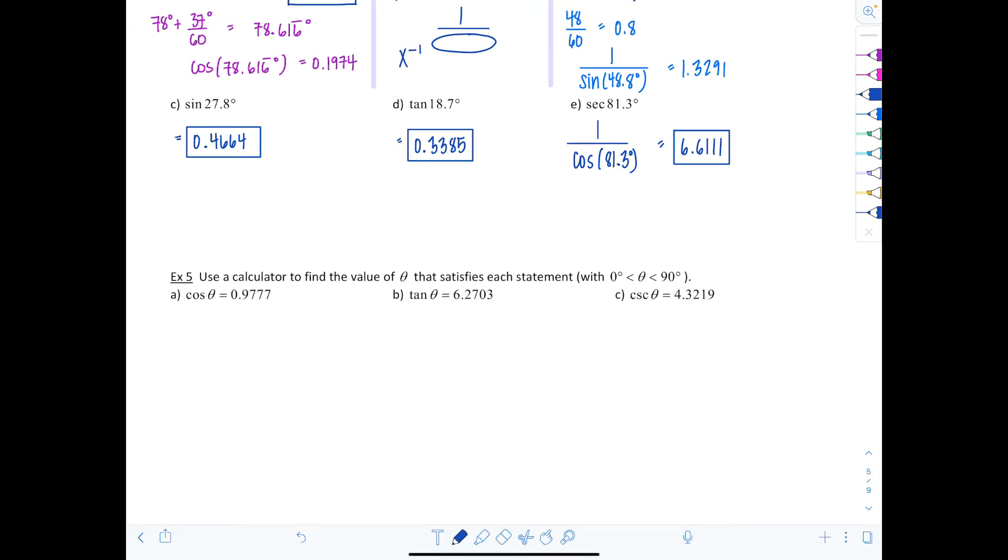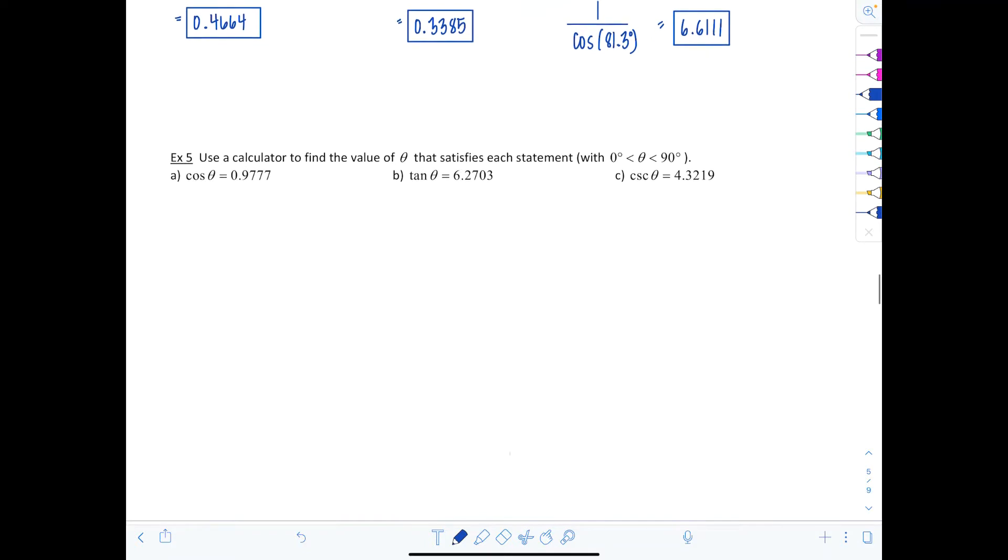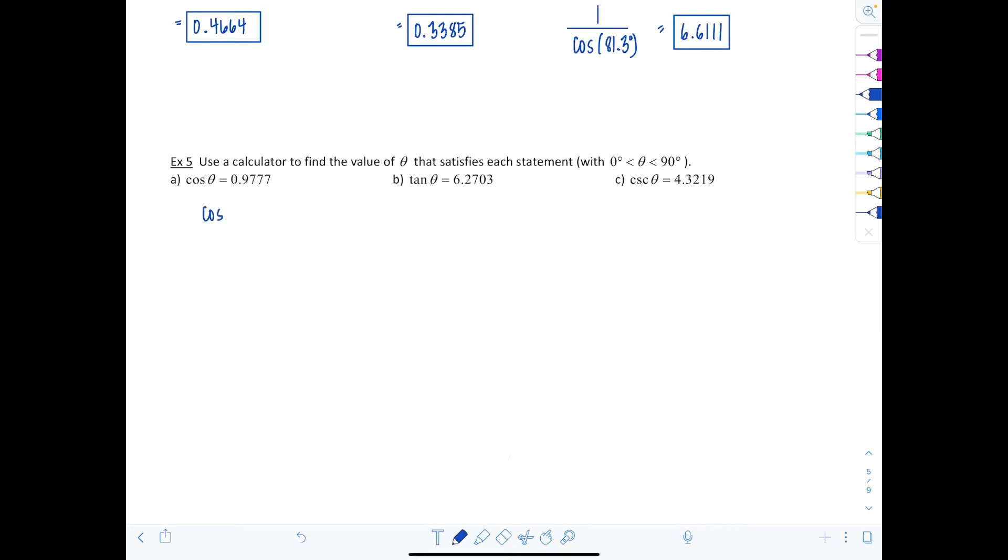Last couple examples. Now we're going to use the inverse feature. It says use a calculator to find the value of θ that satisfies each statement with θ being between 0 and 90. Here we have cosine of θ equals 0.9777, and we want to know what was θ, what was the angle. Now is when you're going to use that inverse button.